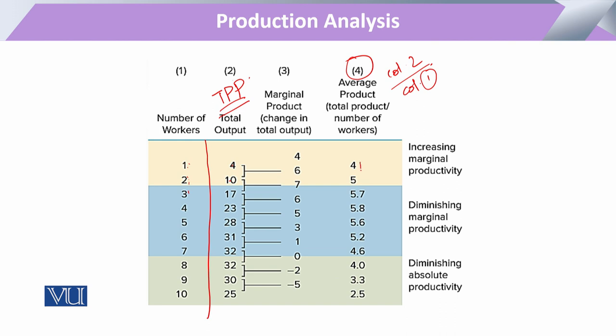Looking at the data, we can see that our average product is first increasing, but after a certain point it starts to decrease continuously. In the general working of the economy, there are various aspects behind this decline in average productivity.